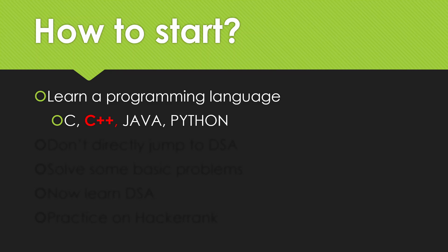Why only these four languages? If you know another language such as R, Ruby, or Scala, you can program in it, but when you are solving a problem and searching for editorials online, most solutions are either in C++, Java, or Python. If you know another language, you first have to understand the C++ code and then convert it — that conversion wastes a lot of time. So I recommend learning one of these four.